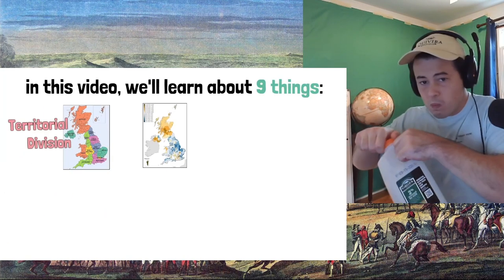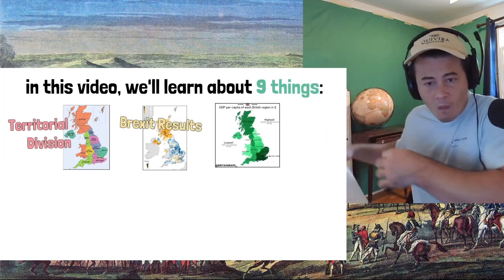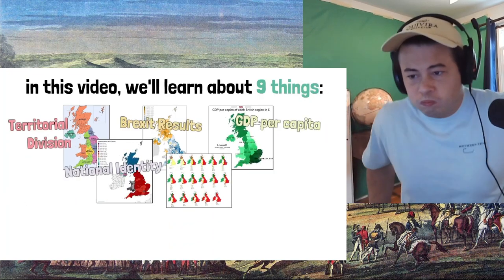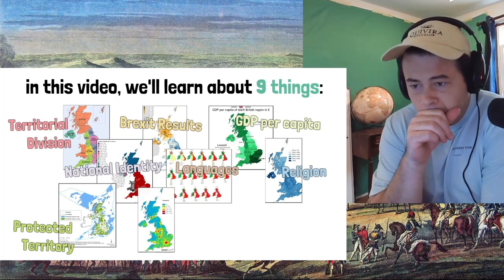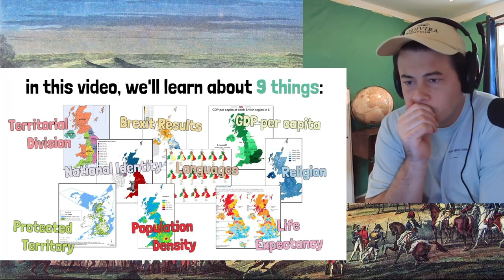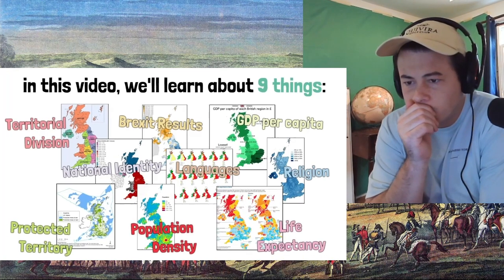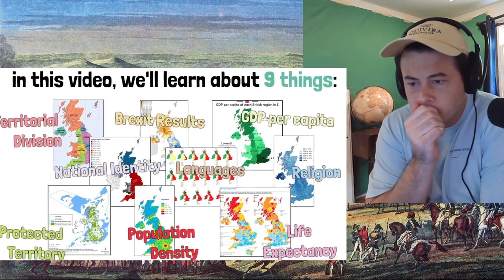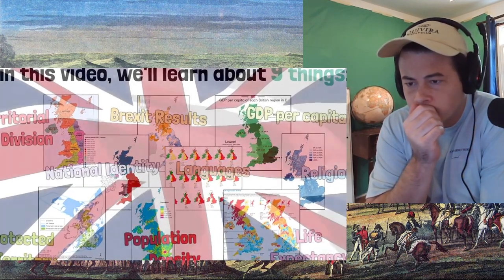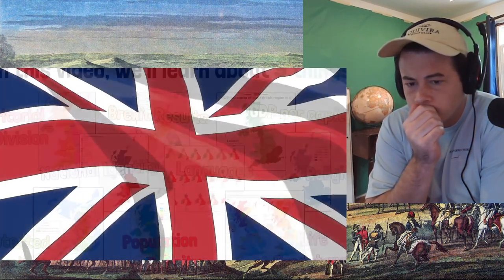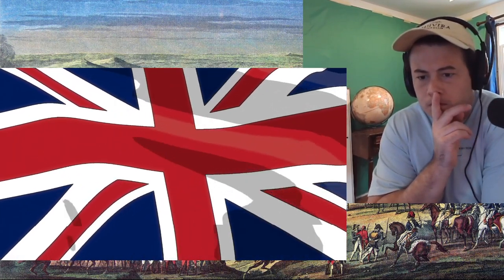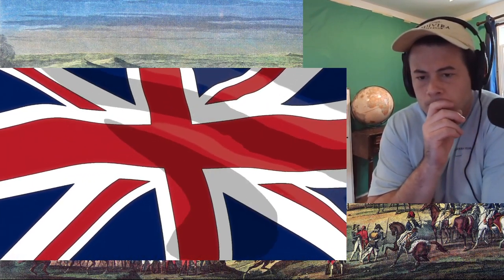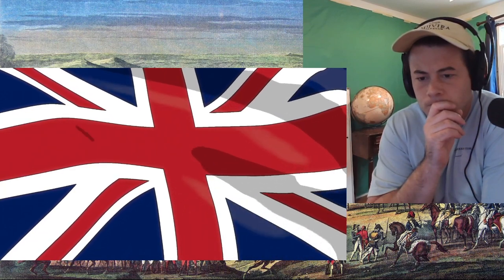We'll learn about nine things in this video: territorial division, Brexit results and current polls, GDP per capita, national identity, languages throughout time, religion, protected territory, population density, and life expectancy. By looking at these maps, I think we'll be able to learn a little about how the UK is as a country — the identity of its people, the differences between where they live, and some interesting facts about territory as well.